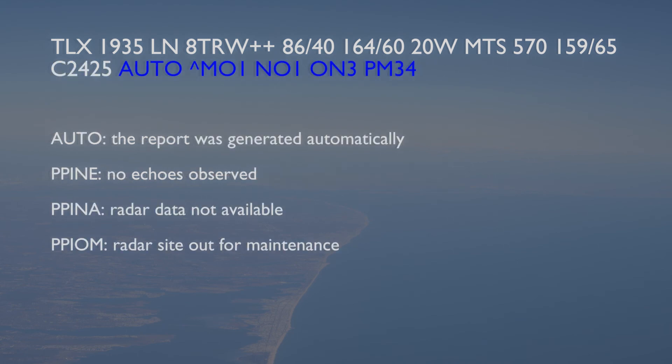Next, one of four remarks are added to the report. AUTO indicates the report was automatically generated by the weather radar system. PPINE means no echoes were observed by this radar site. PPINA means no data from the radar site is available, and PPOM means the radar site is down for maintenance.